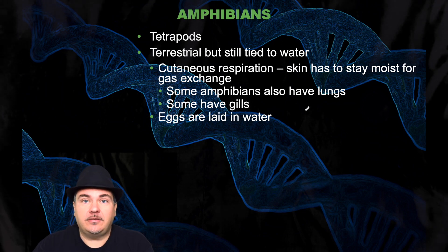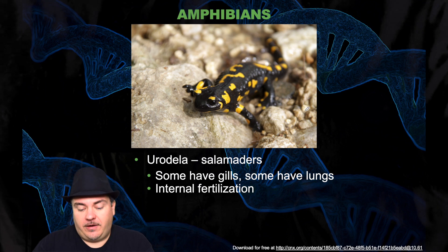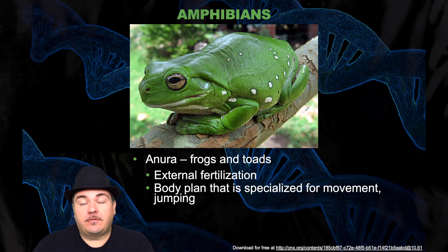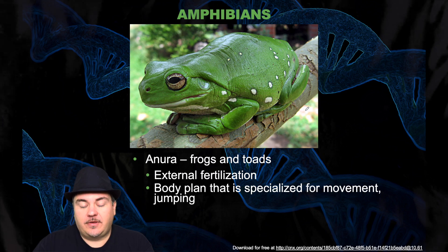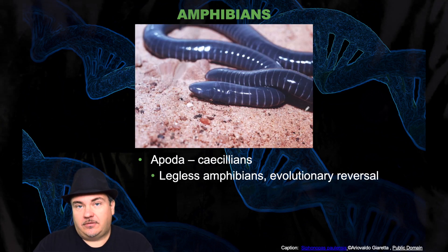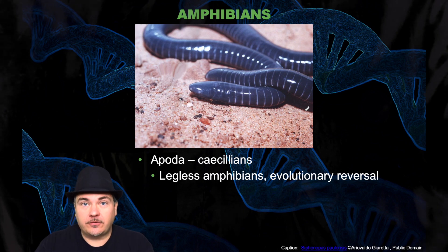Their eggs are laid in the water, not on the land. Types of amphibians: you have the salamanders — some have gills and some have lungs, and they have internal fertilization. Then you have the frogs and toads, which have external fertilization and a body plan specialized for movement, in particular jumping. Then you have the caecilians, which are legless amphibians — it was an evolutionary reversal where an ancestor had legs and they lost those legs.